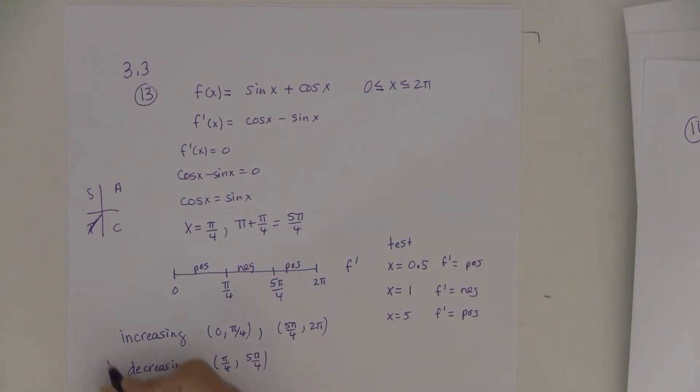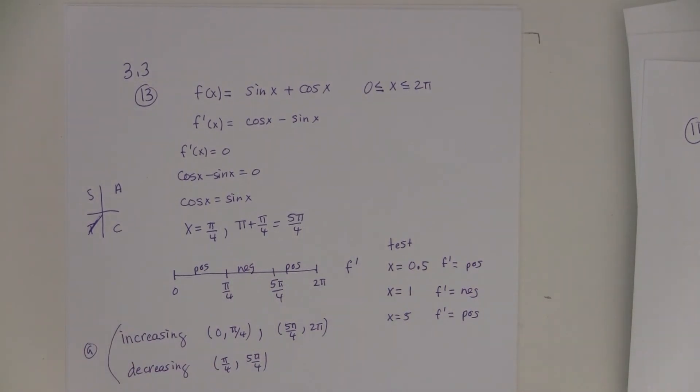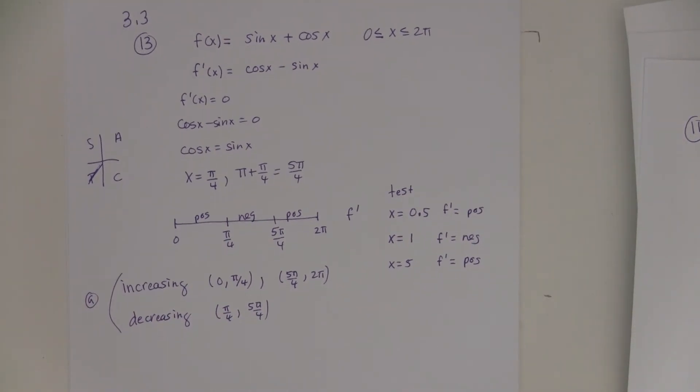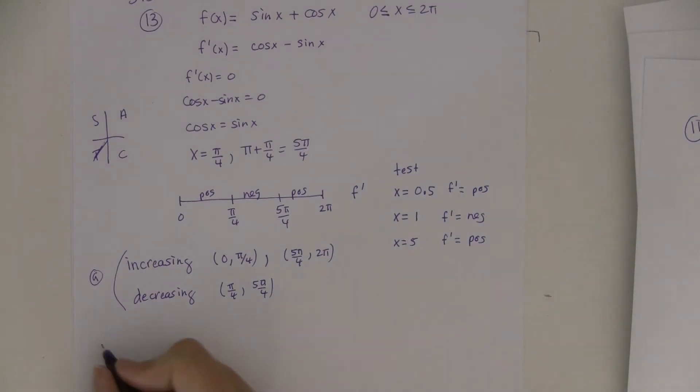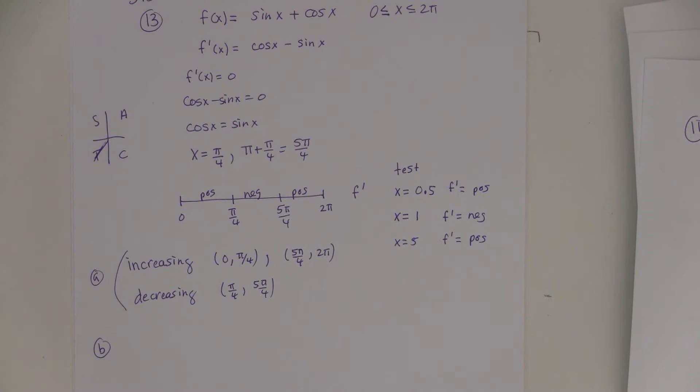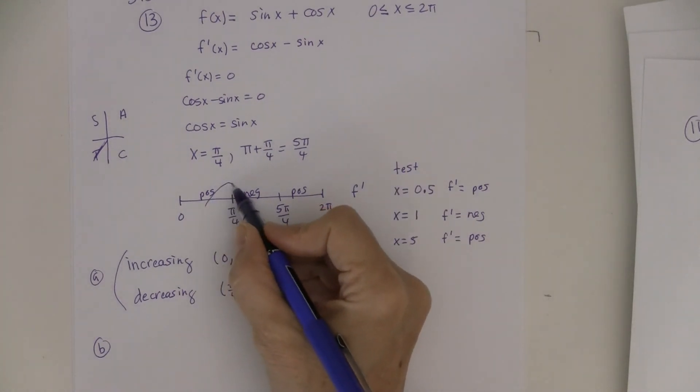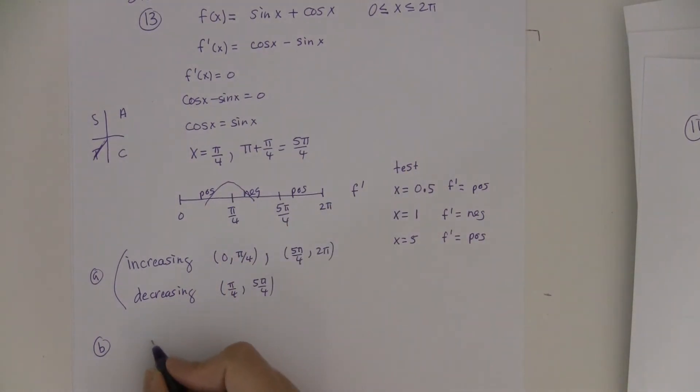And then this was part A. And that's what I was really asked to do was part A. And part B is where you got local maxes and local mins. It didn't ask about absolute max and absolute min. So I don't have to worry about finding that. But the local ones, they want me to say.